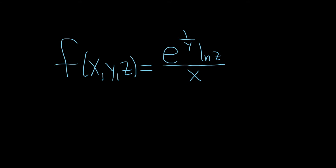Let's focus first on y. Here you have e to the 1 over y. The only time this is going to be an issue is if y is equal to 0, because then you would get 1 over 0. So y cannot be equal to 0.